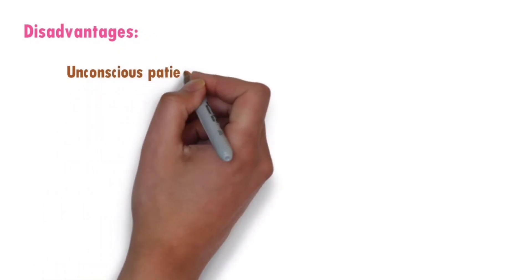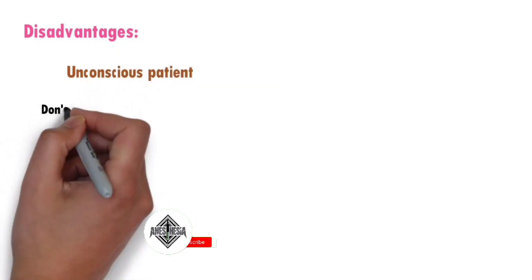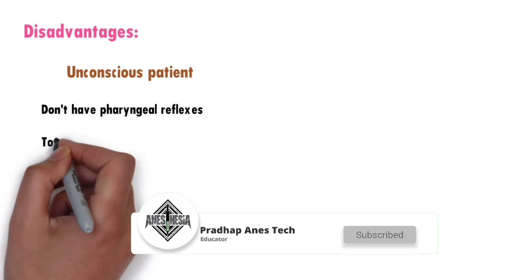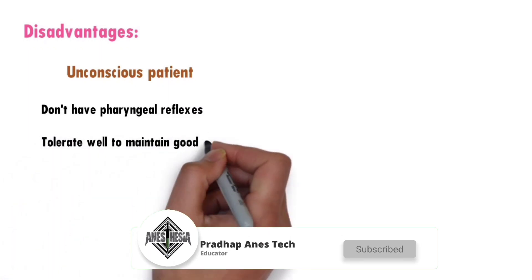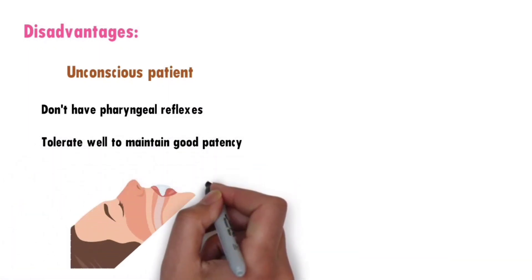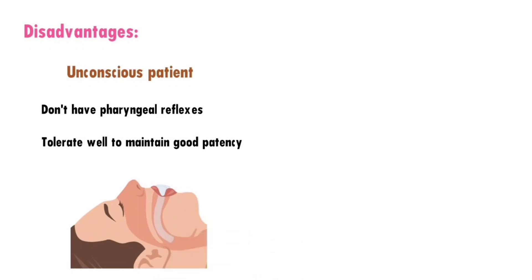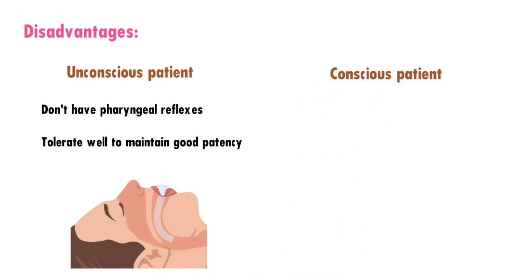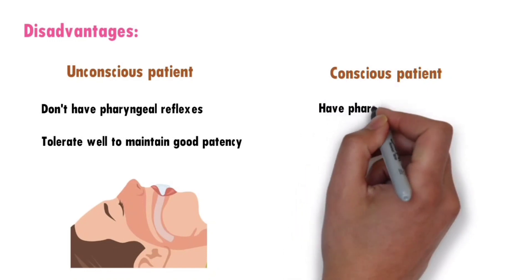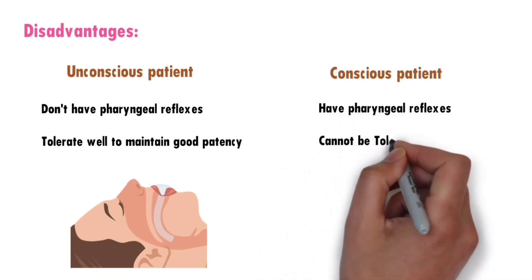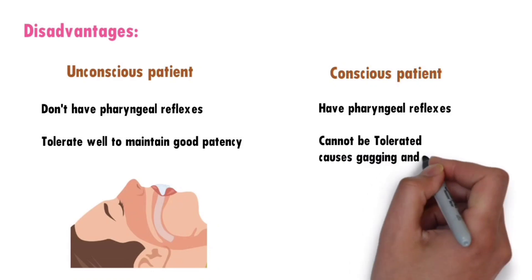Disadvantages of inserting an oropharyngeal airway: it is used only for unconscious patients, because they don't have pharyngeal reflexes and tolerate it well to maintain good patency. In contrast, for a conscious patient it induces pharyngeal reflexes, causing gagging and vomiting, and cannot be tolerated.